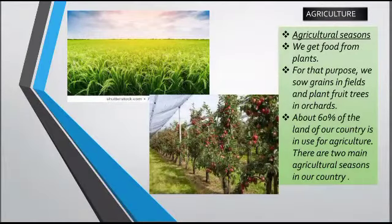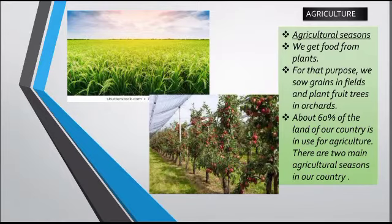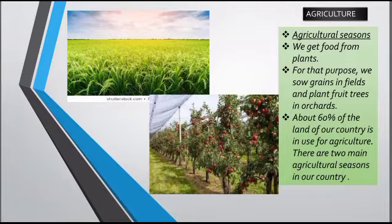Now, what is agriculture? We all know that different crops are grown as per different seasons, but still these crops are available to us throughout the year. As per the season these crops are grown — we get food from plants. For that purpose we sow grains in fields and plant fruit trees in orchards. About 60 percent of the land of our country is used for agriculture, and there are two main agricultural seasons in our country.